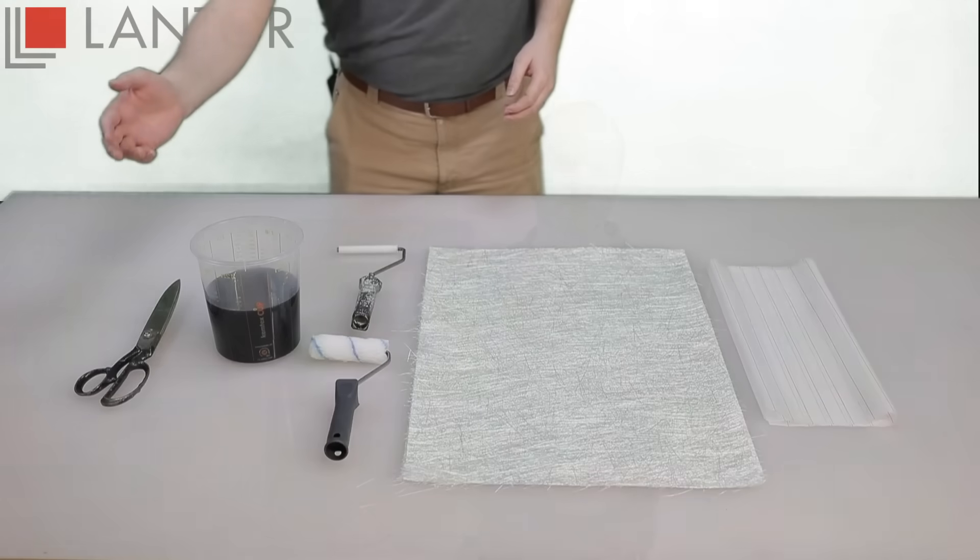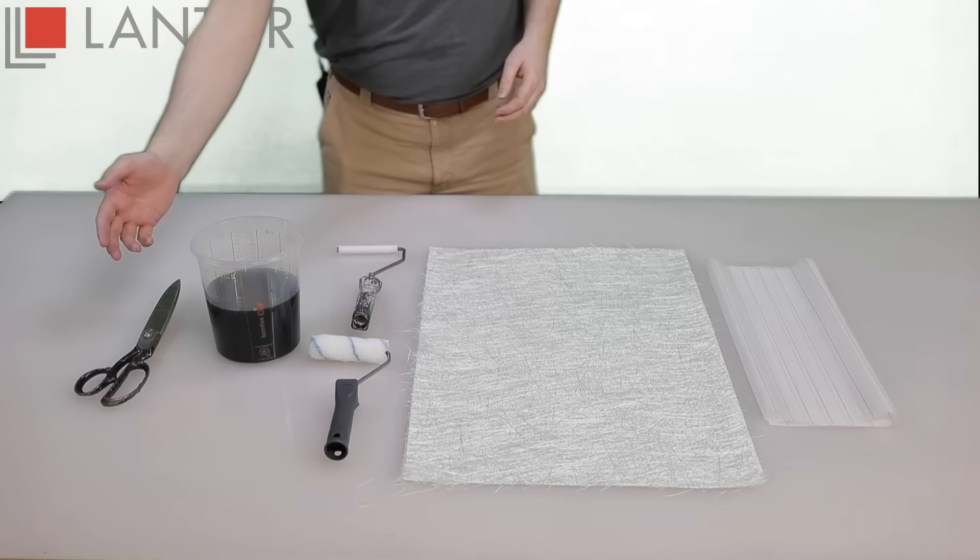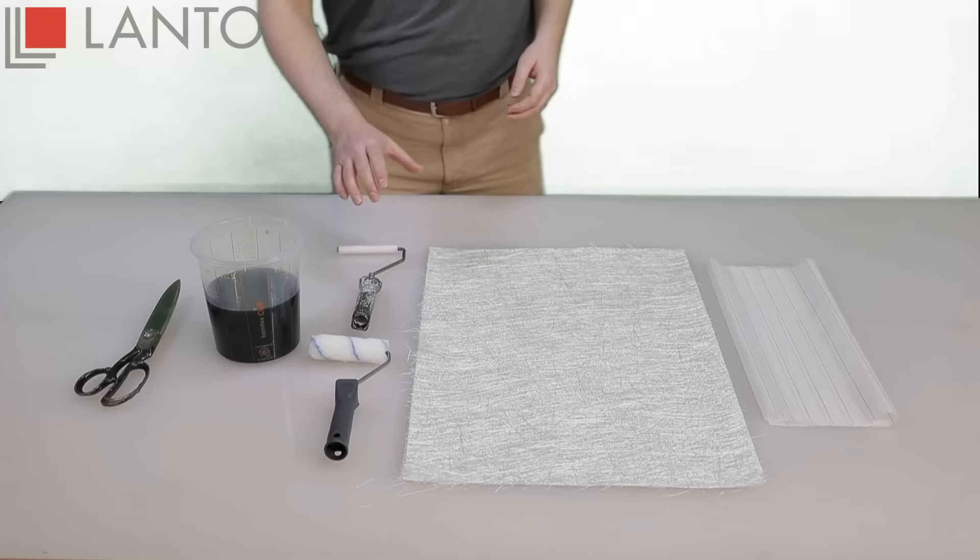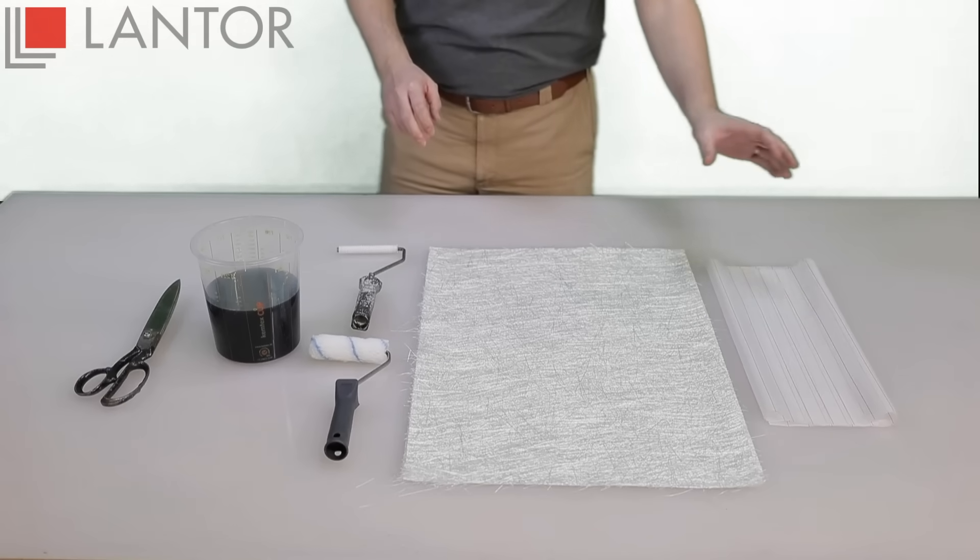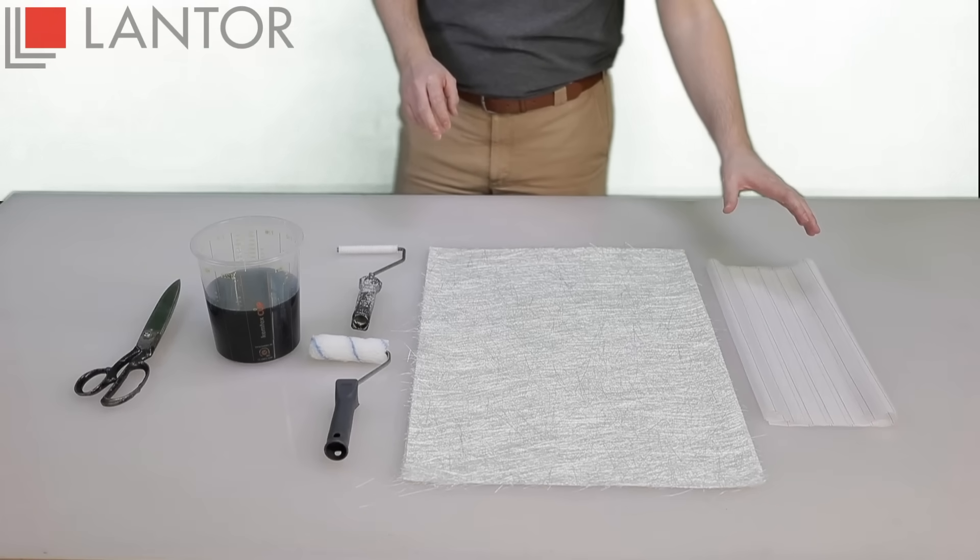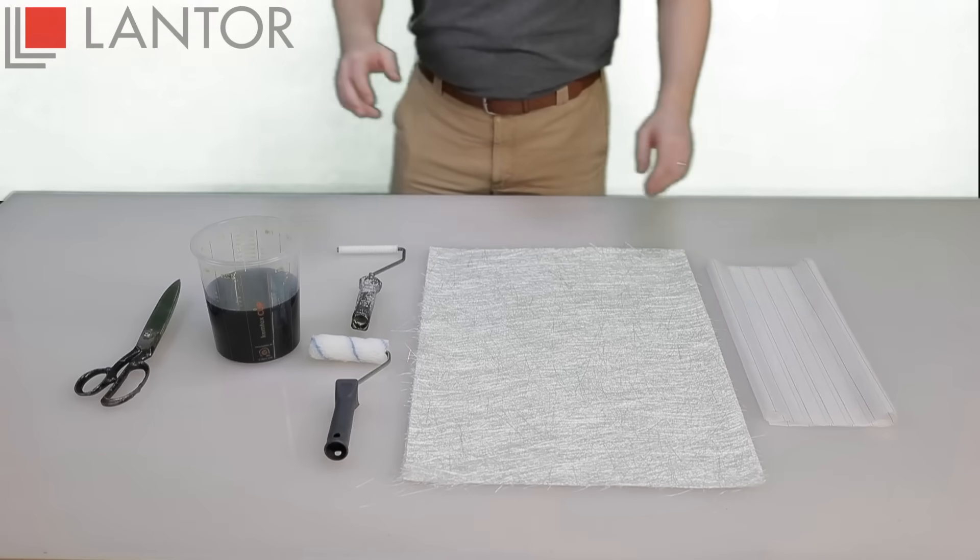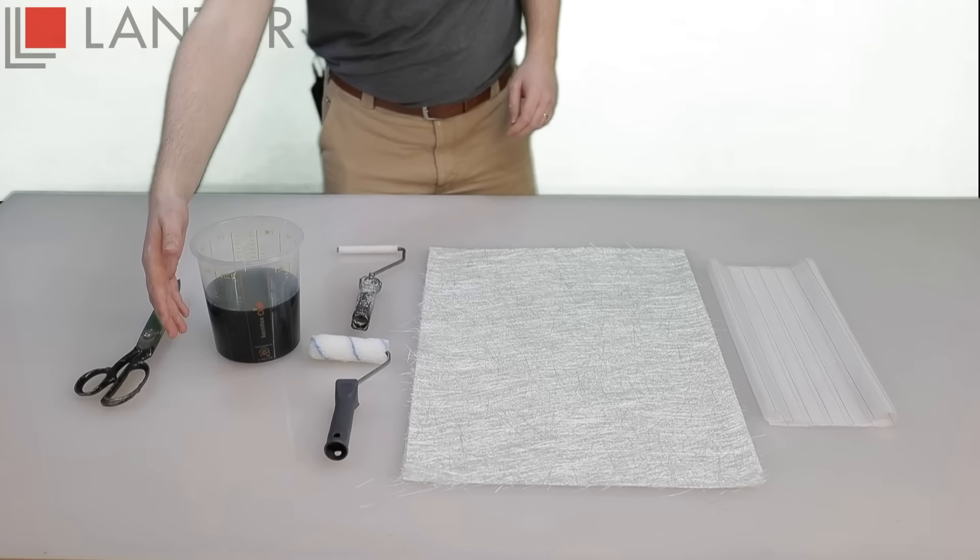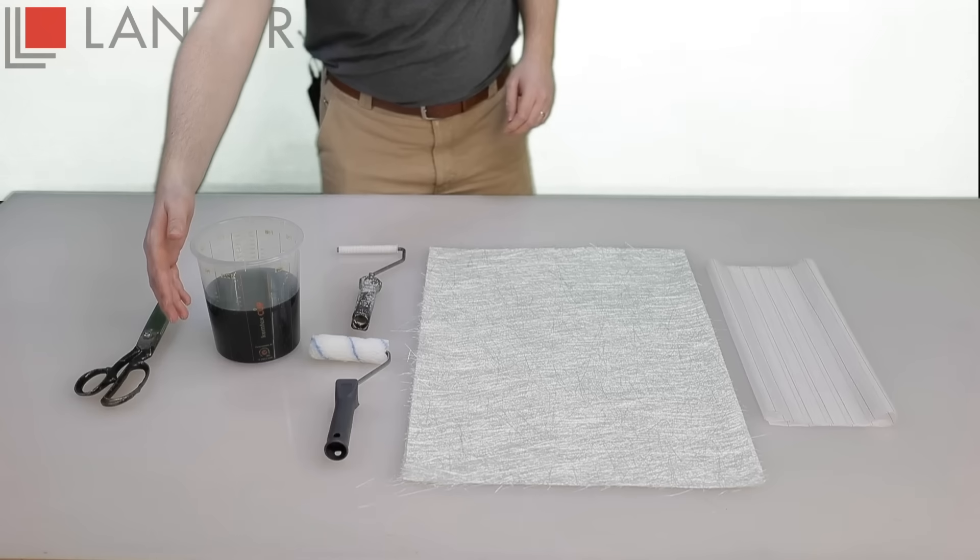To laminate this part we use scissors to cut the plies, polyester resin, a wet out roller, a deaeration roller, of course glass fiber, and a sheet of peel ply to give the backside a uniform finish. On the table we have a polypropylene top which acts as our mold surface and which does not stick to the cured resin.